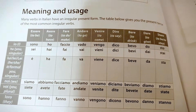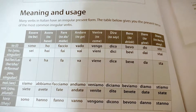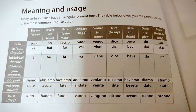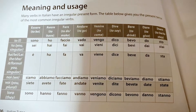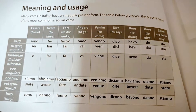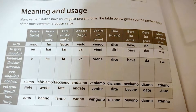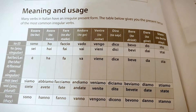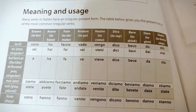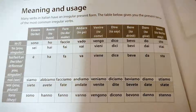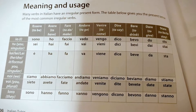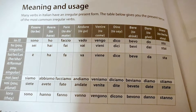And then we are going to dare. Pay attention — it's not 'to dare' in English, but it's dare, meaning to give. Io do, tu dai, lui/lei dà, noi diamo, voi date, loro danno.